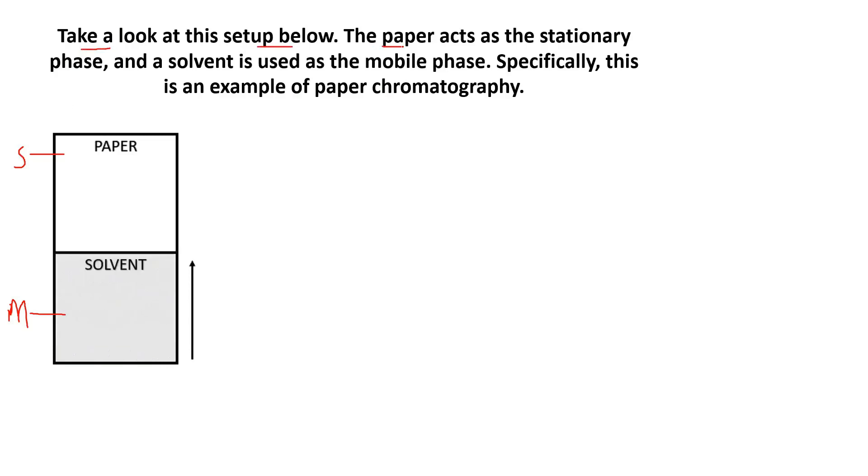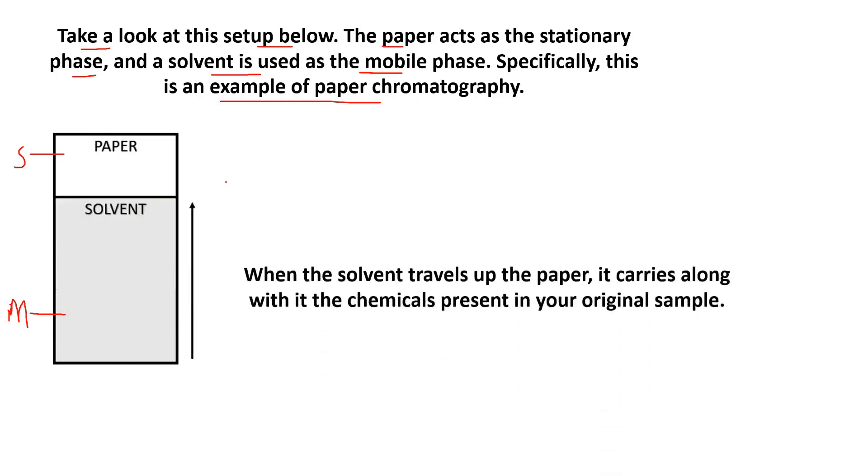Take a look at this setup below. The paper acts as a stationary phase and solvent is used as a mobile phase. Specifically, this is an example of paper chromatography, because paper is used.